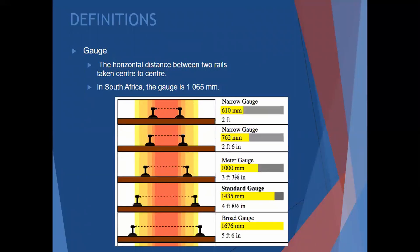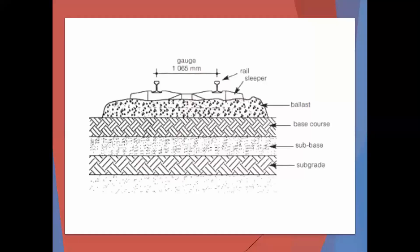Another important definition to remember is the gauge - that is the horizontal distance between two rails taken center to center. In South Africa, the distance is 1065 millimeters. It's interesting how engineers study this, but the people in charge spending millions of rands sometimes buy trains that don't fit on the rails. South Africa uses one standard gauge; there aren't different standards like some countries.